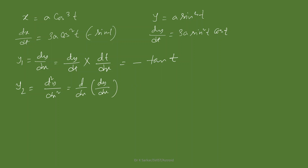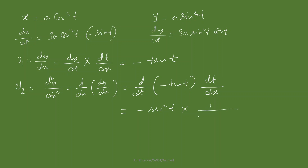We write dy/dx = -tan t and convert to d/dt, multiplying by dt/dx. The derivative of -tan t with respect to t is -sec²t. Multiplying by dt/dx = 1/(3a·cos²t·sin t), and noting the two minus signs give a plus, we get y₂ = 1/(3a·cos⁴t·sin t).